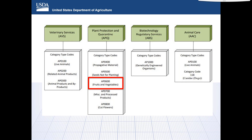Fruit and vegetable imports are regulated by APHIS Plant Protection and Quarantine, which is agency program code APQ, in the APHIS core message set. This slide and the following two slides are diagrams from the APHIS core message set implementation guide. These diagrams, along with others from the guide, may be useful for filers to understand the flow of the import data required for fruits and vegetables. AP0600 definitions of the codes may be found in the Appendix PGA, and the technical rules enforcing use of certain codes may be found in the Implementation Guide.